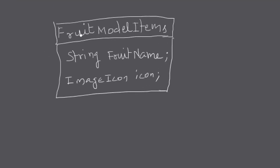First we will create a class called FruitModelItems. Each JList item is represented by this class. It will supply data for each JList item — at runtime it will supply the fruit name, which is the label displayed for the item, and also supply an image icon. So one list item consists of two pieces of information: the fruit name and the icon to display with the list item.